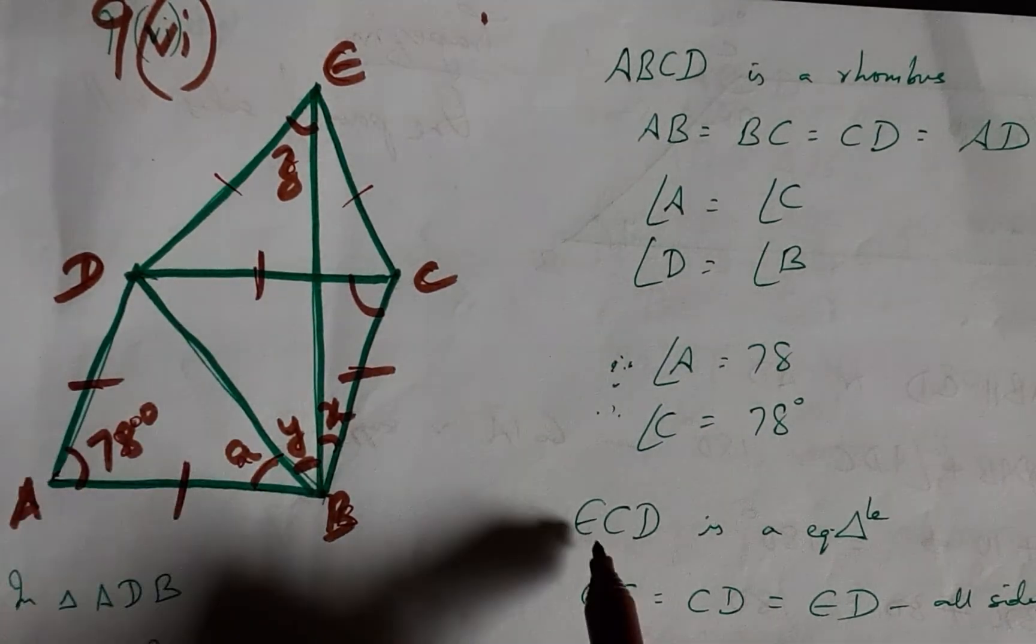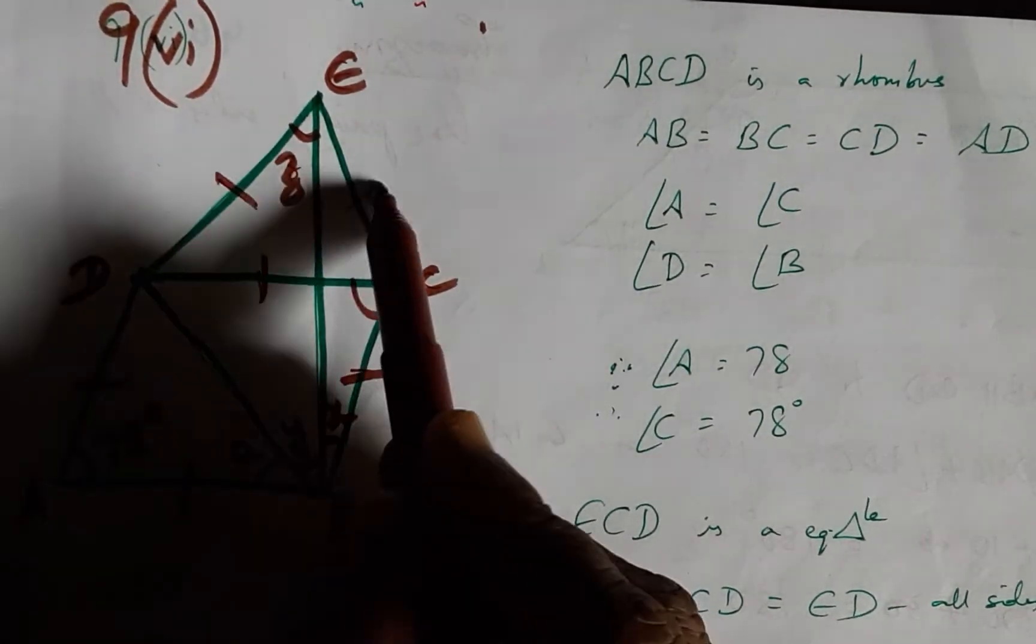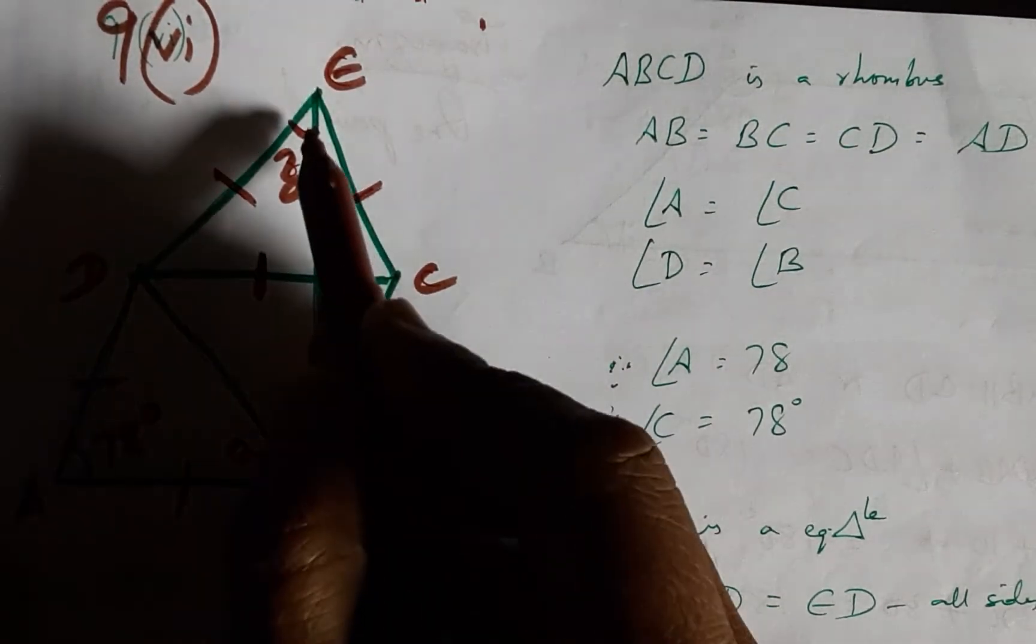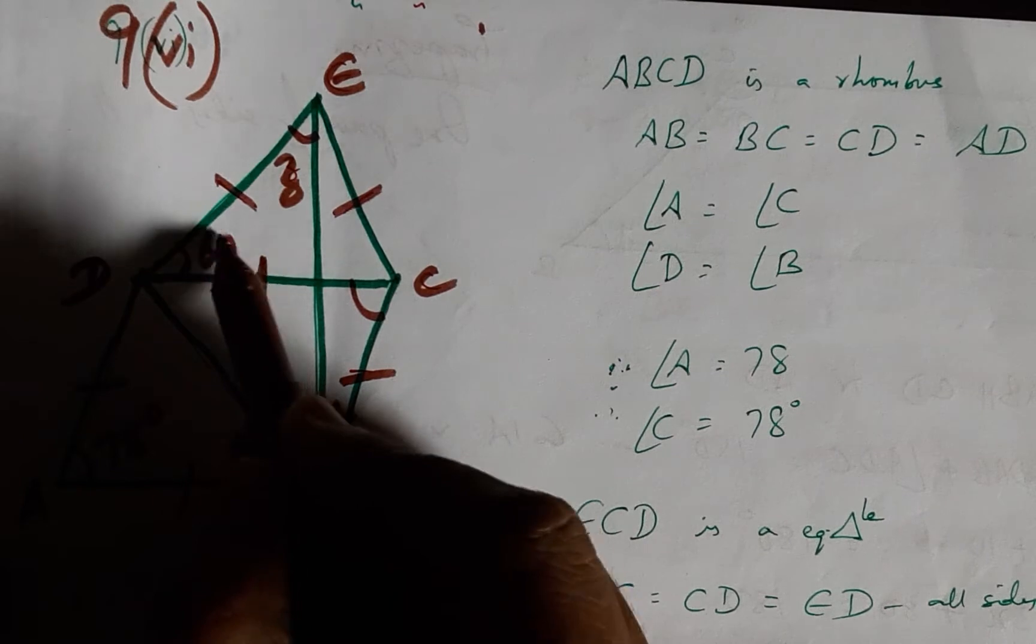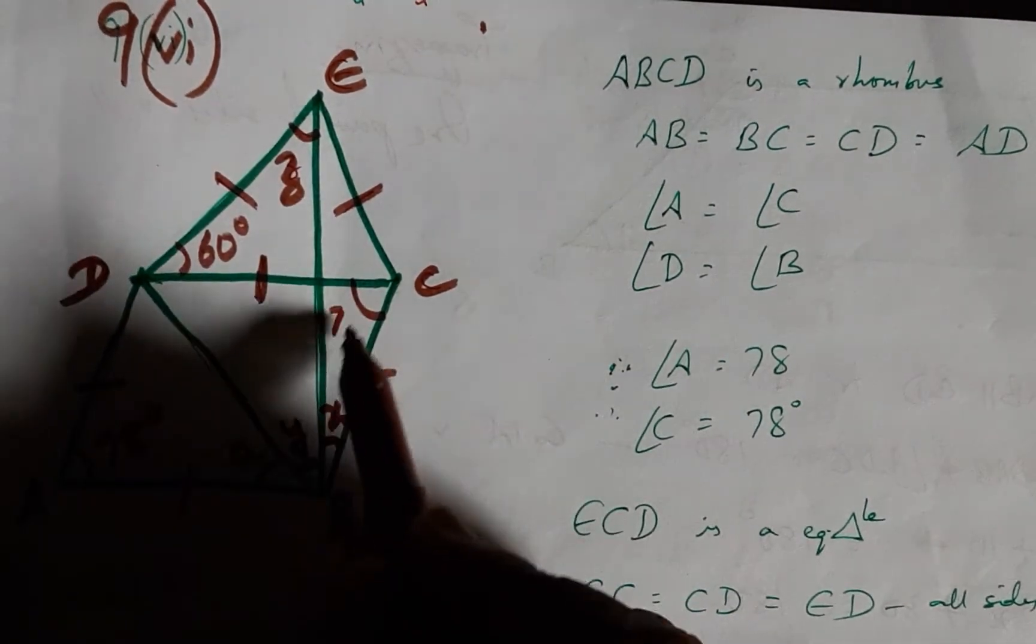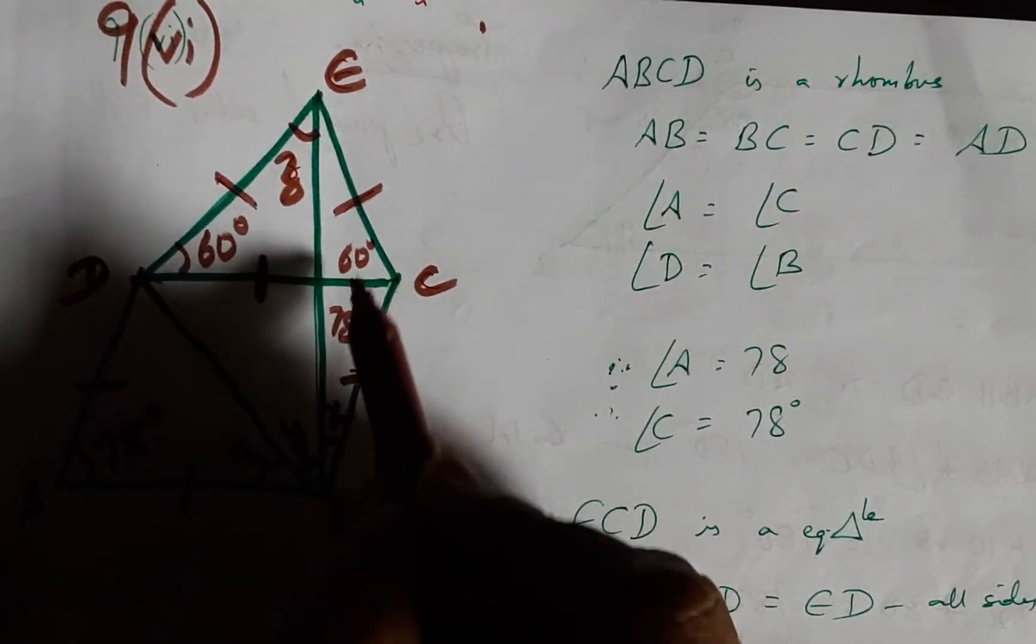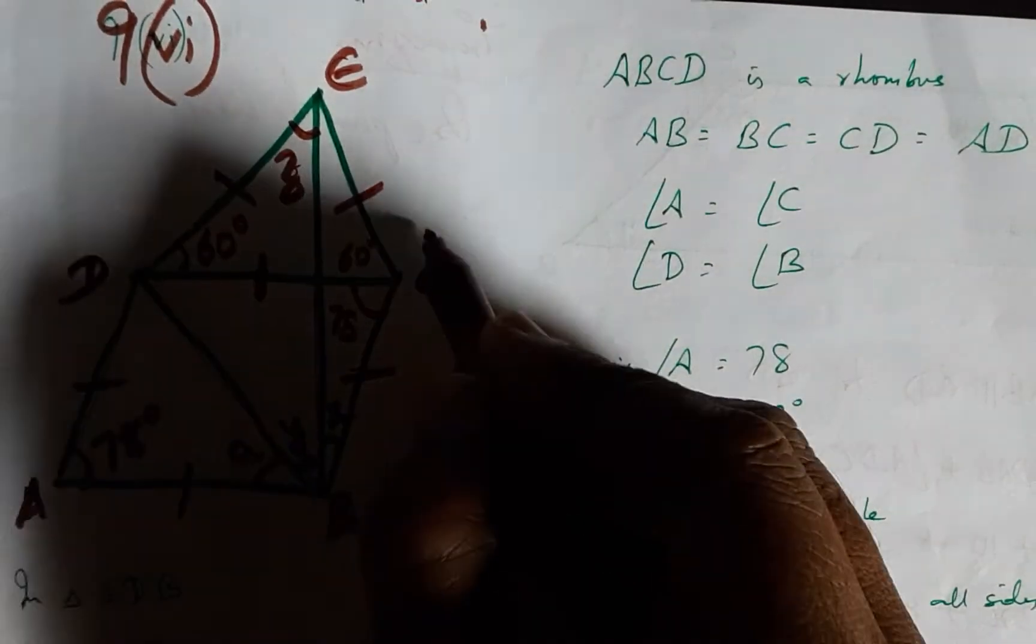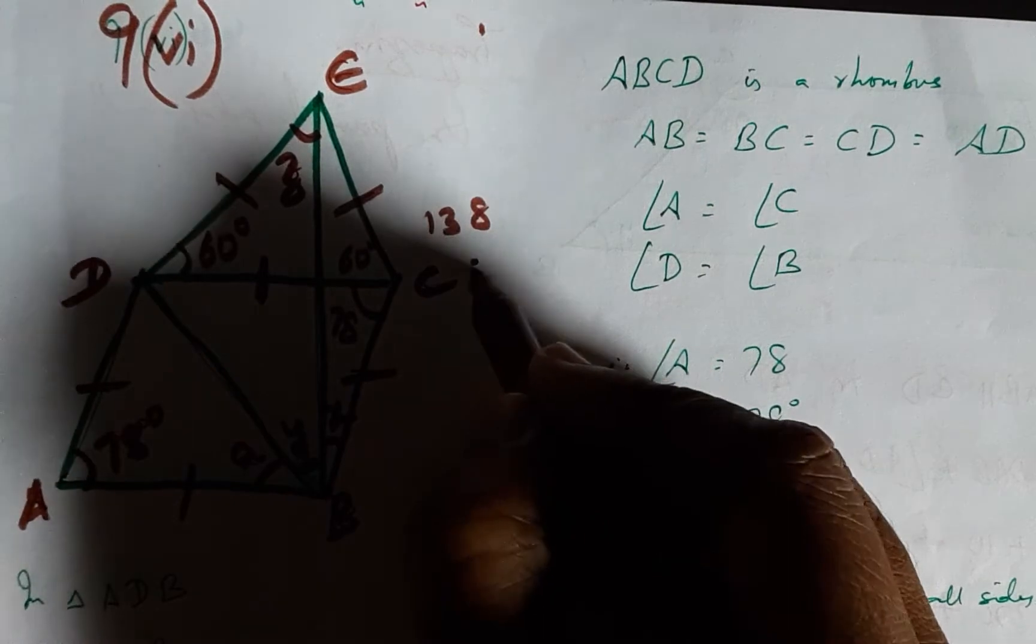Another hint is that ECD is an equilateral triangle. Therefore, each of these angles will be 60 degrees each. Now, this is 60 and this is 78, so the total will be 138, which is angle C.